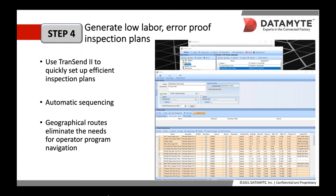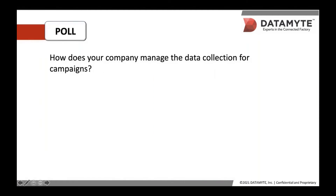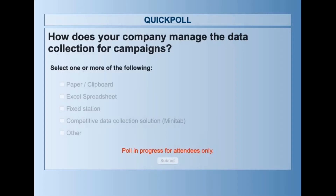At this time, Melissa is going to jump in to do another poll and then continue on with step five. The poll question is: how does your company manage the data collection for campaigns? You can select one or more of the following: paper or clipboard, Excel spreadsheet, fixed station, competitive data collection solutions such as Minitab, or other.